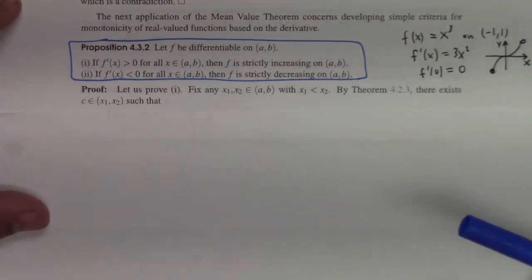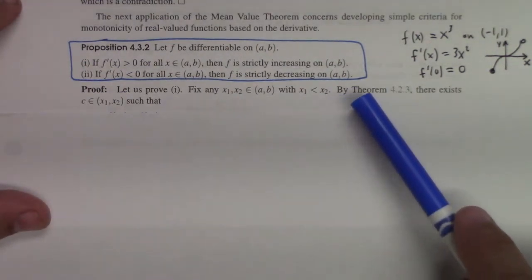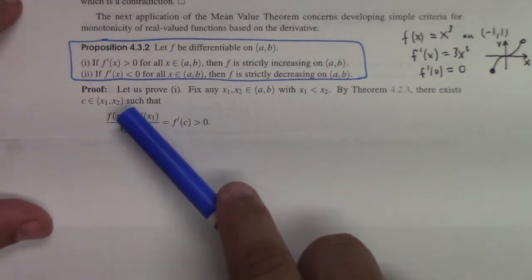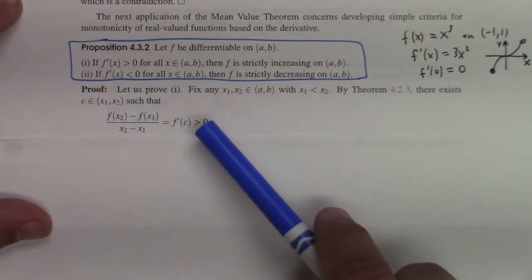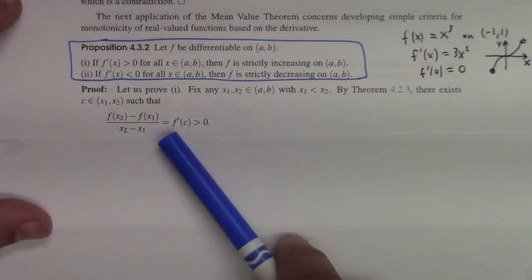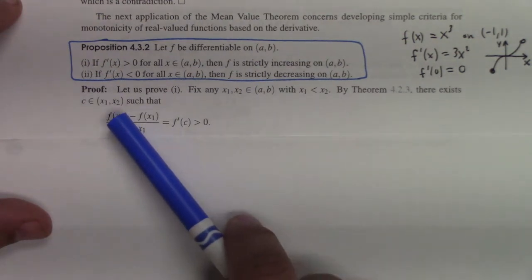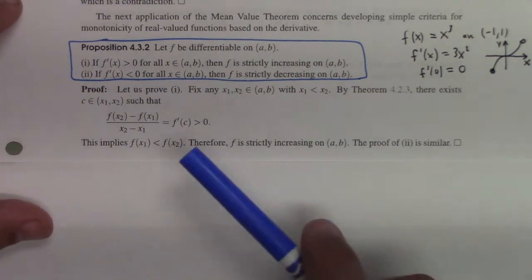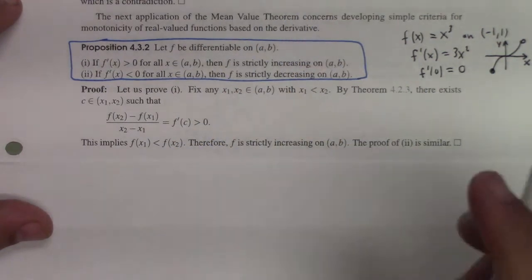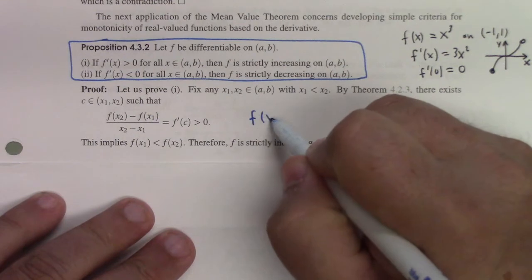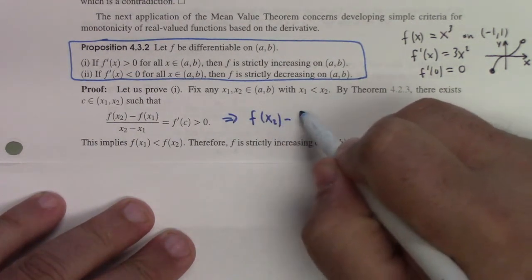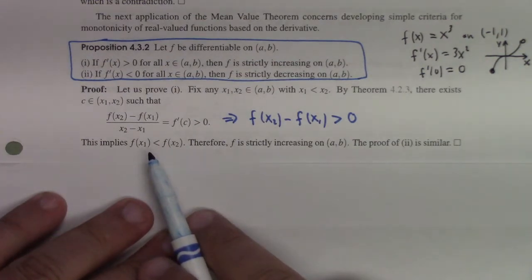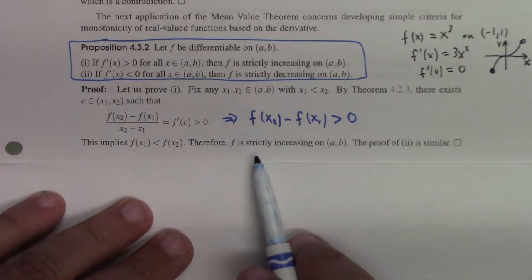Here's the proof. Fix any x₁ and x₂ in (a, b) such that x₁ < x₂. By the mean value theorem, there exists a constant c between x₁ and x₂ such that the average rate of change from x₁ to x₂ equals f′(c), which is positive. Since x₂ − x₁ > 0, it follows that f(x₂) − f(x₁) > 0, meaning f(x₁) < f(x₂). Consequently, f is strictly increasing on (a, b).